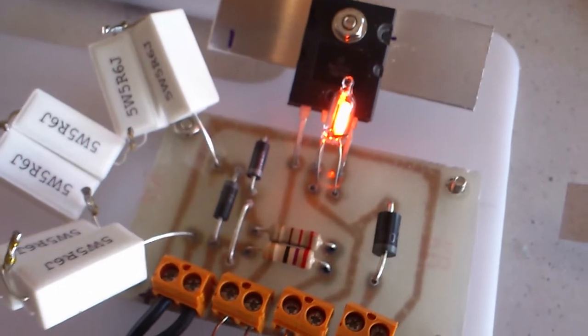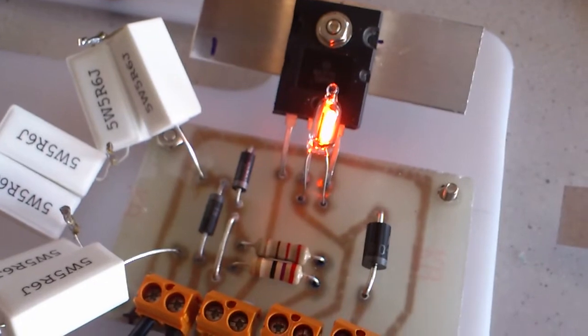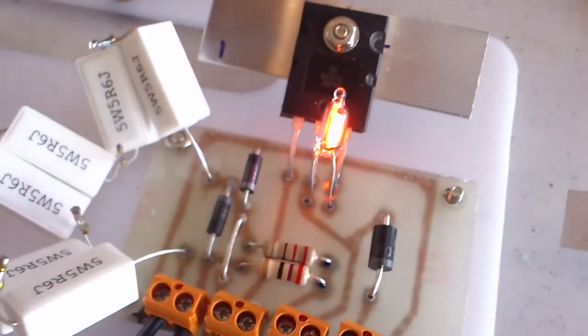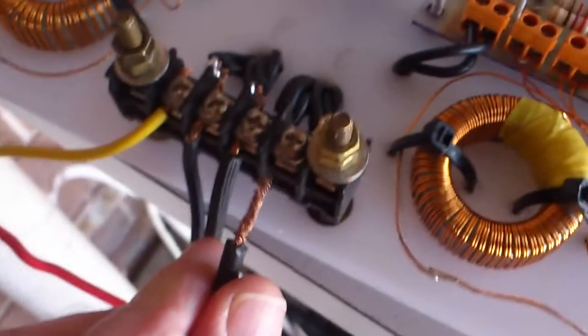Those neon bulbs are connected across the transistor collector and emitter of the transistors, and that's what's being fed basically into the charge battery. I'll just connect it back.